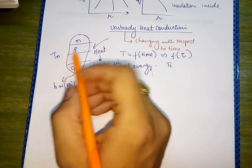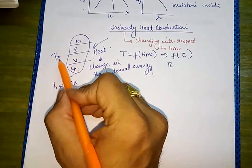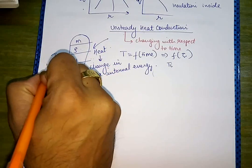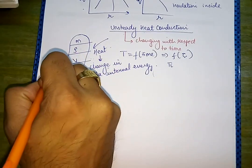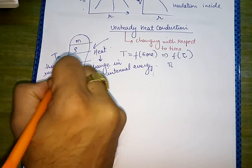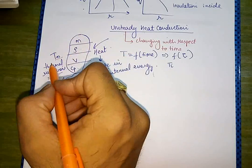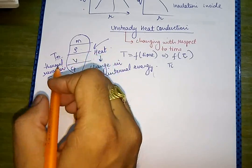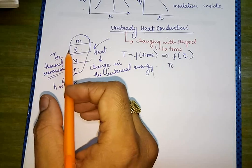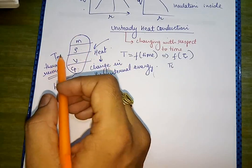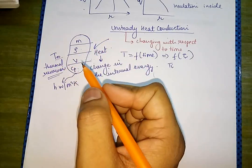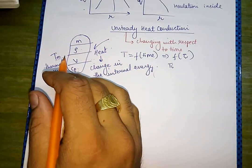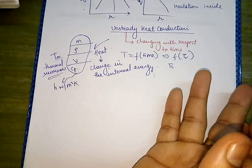A thermal reservoir is an infinite-capacity reservoir such that no matter how much heat you add or remove, its thermal state does not change. For example, like a large ocean — you can remove or add many buckets of water and the water level will not change significantly. So T_infinity is the thermal reservoir, which could be a furnace or normal atmosphere surrounding the body.